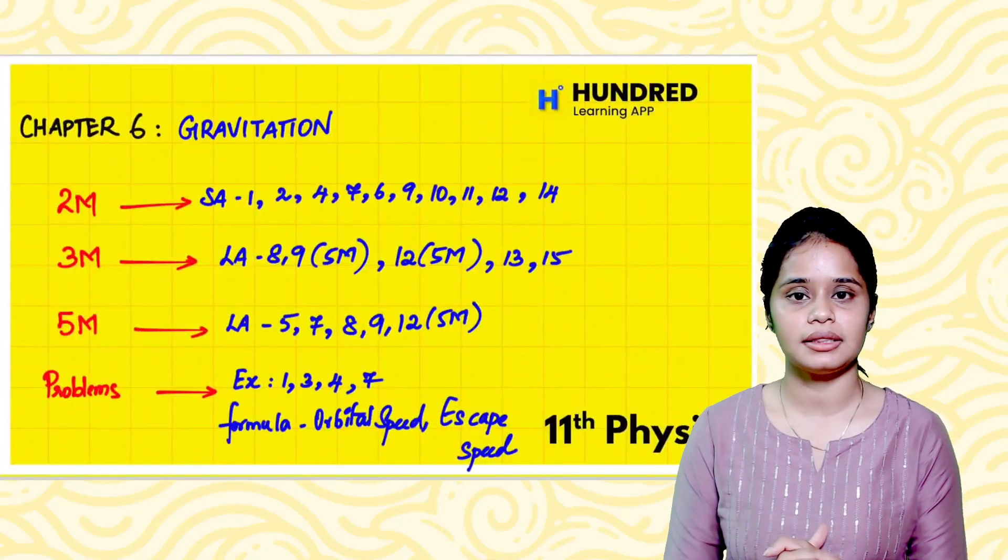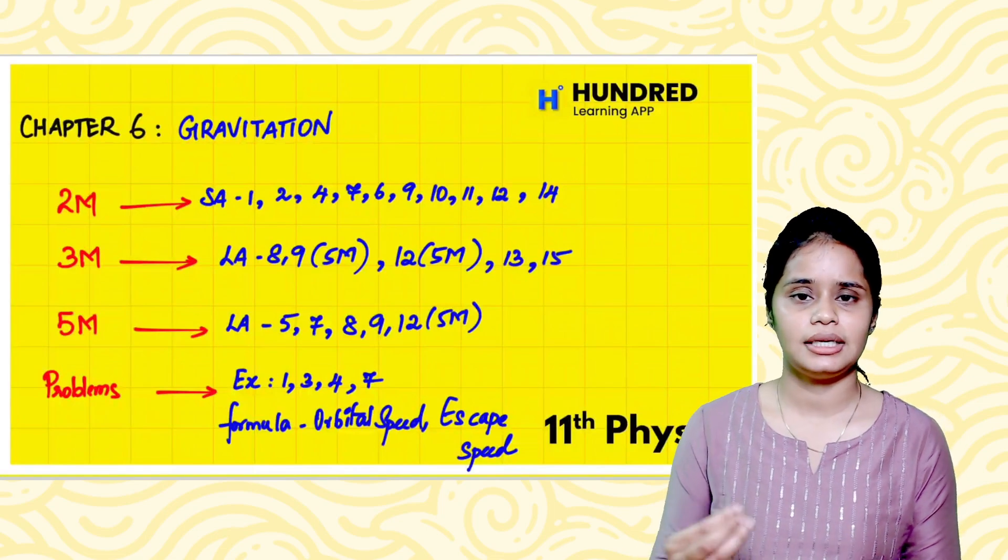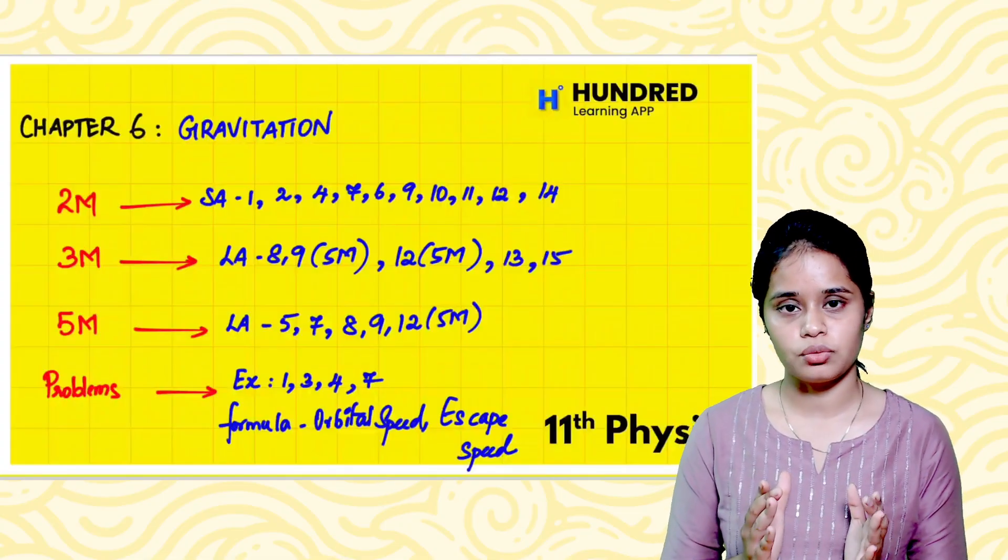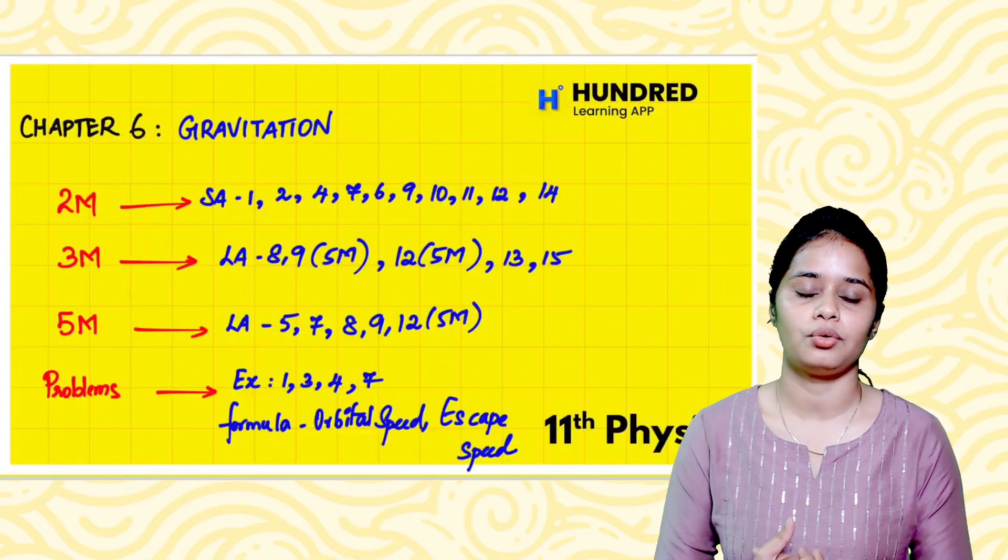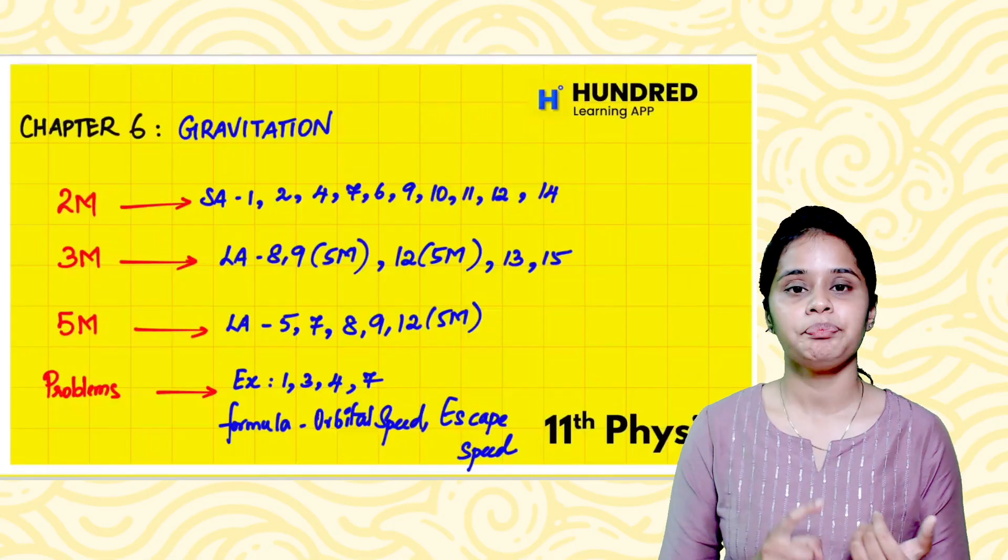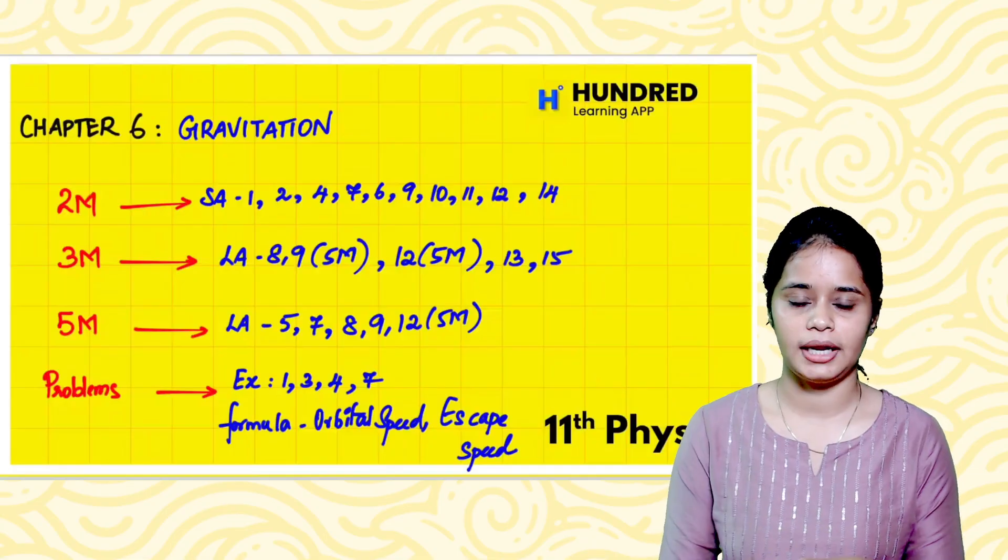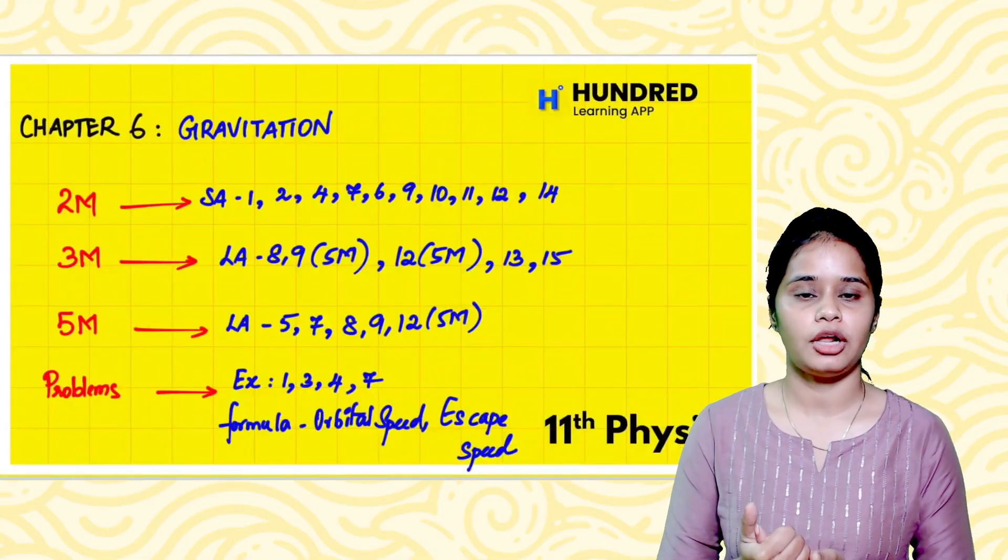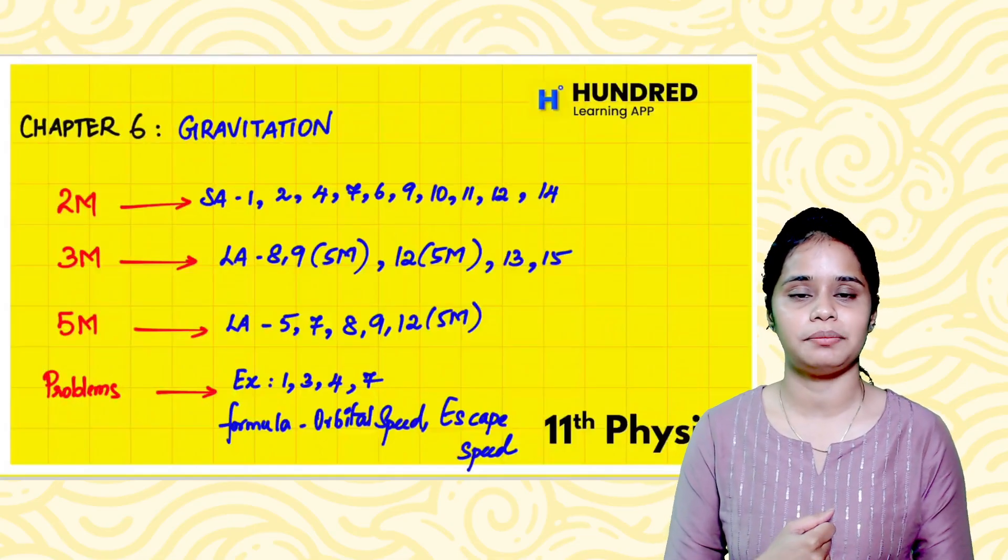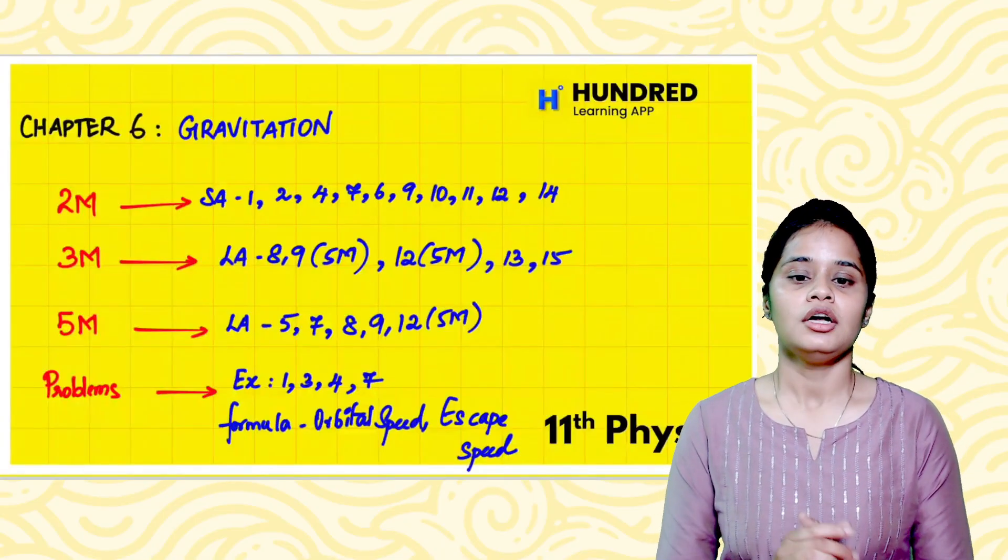Next, the sixth chapter. In the sixth chapter, I'll tell you important questions. All the questions - you'll see the 5 mark question on variation of acceleration due to gravity due to altitude, depth, latitude. These three questions are very important. The escape velocity question is important - derivation of escape velocity and U equals MGH, the potential energy question, is very important.